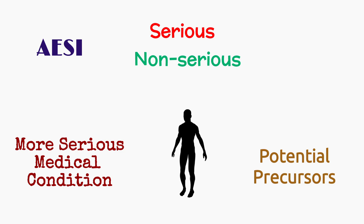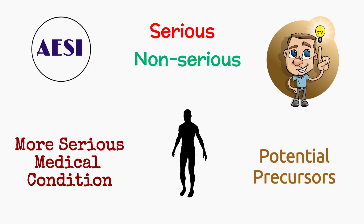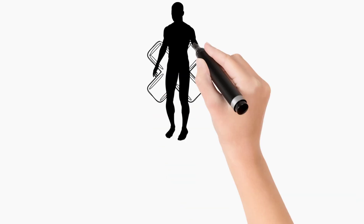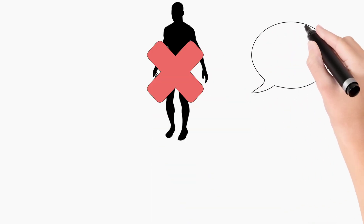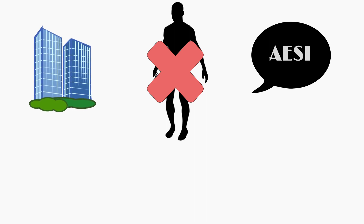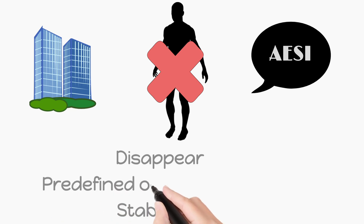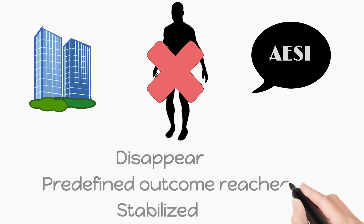I hope till now you have got an idea of what exactly adverse events of special interest are. If a clinical subject is withdrawn from the study due to an adverse event of special interest, the subject should be followed up by the clinical study sponsor until the adverse event of special interest disappears, or the patient's condition has stabilized, or until a predefined outcome mentioned in the protocol is reached.